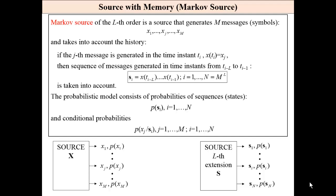Source with memory is the same source that generates M messages, but for the source with memory of the Lth order, we take into account also the history L messages generated before the given message.